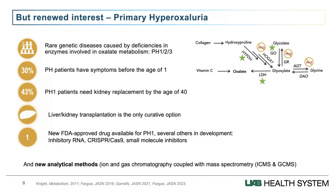After a silence of about 50 years, there has been a renewed interest in understanding oxalate metabolism because of a rare disease called primary hyperoxaluria. Primary hyperoxaluria is caused by deficiencies in enzymes involved in the metabolism of glyoxalate — AGR, AGT, and HOGA1 — responsible for PH type 1, 2, and 3. It is a severe disease: about a third of patients have symptoms at disease onset, and 40% who have PH type 1 need a kidney replacement by age 40. Until recently, liver transplantation was the only curative option. Some patients were responsive to vitamin B6, the cofactor for enzyme AGT, but only a limited number with PH1.